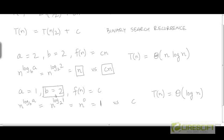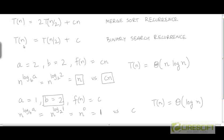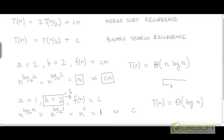Now note that if we had changed the binary search recurrence so that T(n) = T(n/3) + c — changing b from 2 to 3 — conceptually this means instead of looking at the middle element, we divide the array into 3 equal parts and look at the boundary elements of those 3 parts.